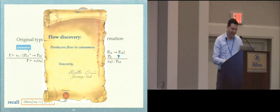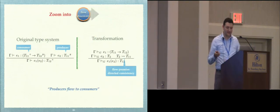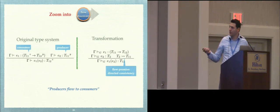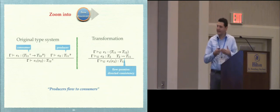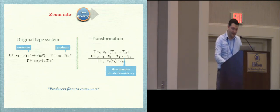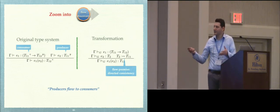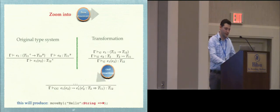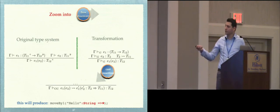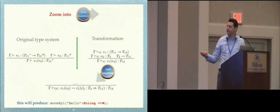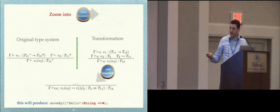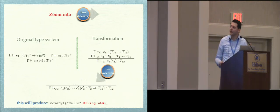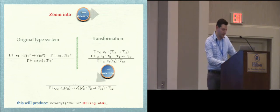After this, we apply the flow discovery step. Looking into the methodology, it tells you simply: producers flow to consumers. So we apply this and the variable T2 flows into T11 with a flow premise — which checks for consistency but is directed. This lets us identify the flow that must happen, which is useful for cast insertion. In the cast insertion, we just follow this flow. The actual parameter is cast to T11, which is what we've seen in the cast insertion for our example — 'hello' needs to be cast from string to dynamic type in order to enter the function.